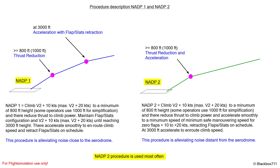This procedure is supposed to alleviate noise close to the aerodrome. The second procedure is NADP-2, where you climb out initially with V2 plus 10 knots — again maximum V2 plus 20 knots — to a minimum height of 800 feet. Some operators choose 1000 feet for simplification. From there, thrust is reduced to climb power and the aircraft accelerates smoothly to a minimum speed of the safe maneuvering speed for zero flaps plus 10 or plus 20 knots, retracting the flaps and slats on schedule.